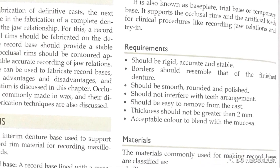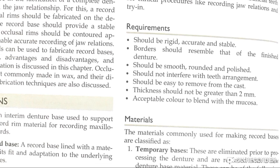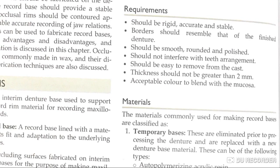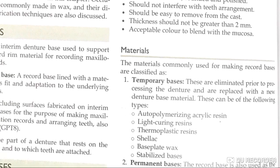What are the requirements? How should the record base be? Rigid, accurate, stable borders like finished dentures, and smooth, rounded, polished so as not to interfere with teeth arrangement. It should be easy to remove. Thickness should not be greater than 2 mm, and it should have an acceptable color so that it can blend with mucosa.